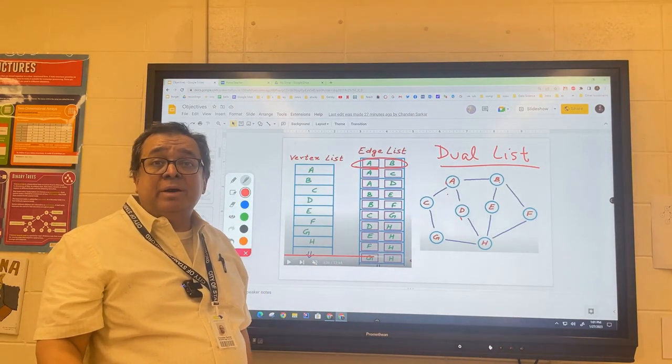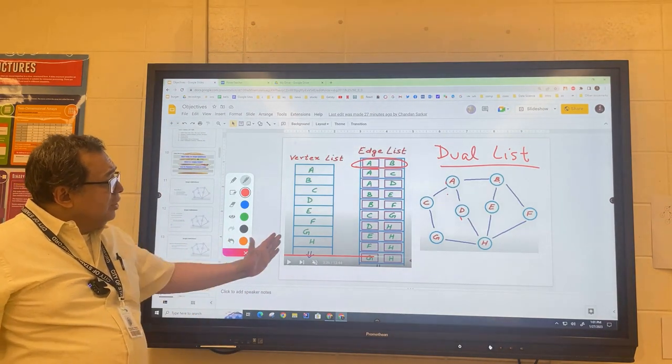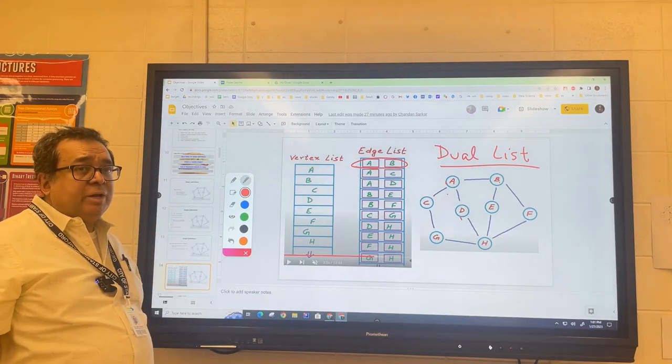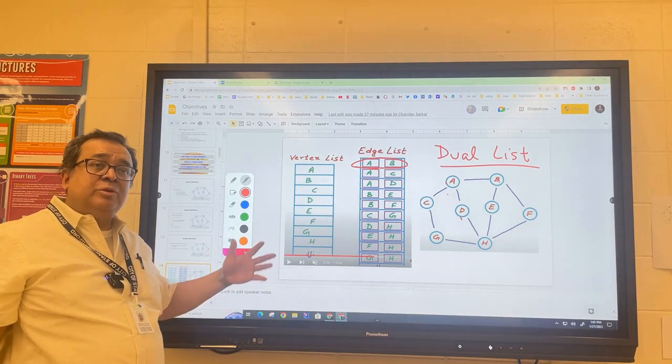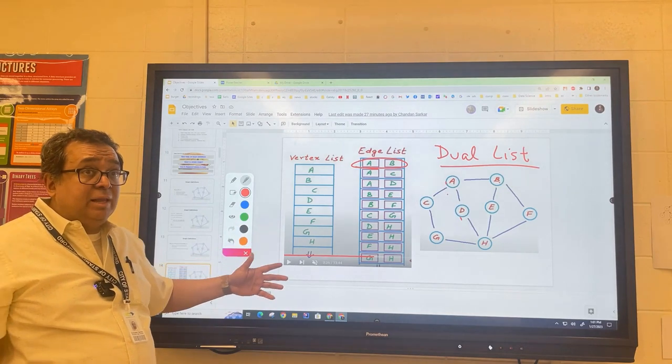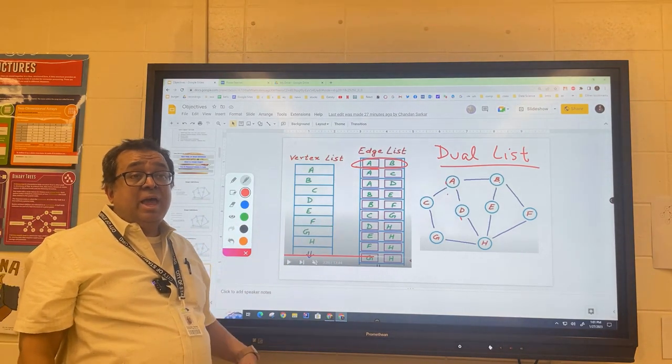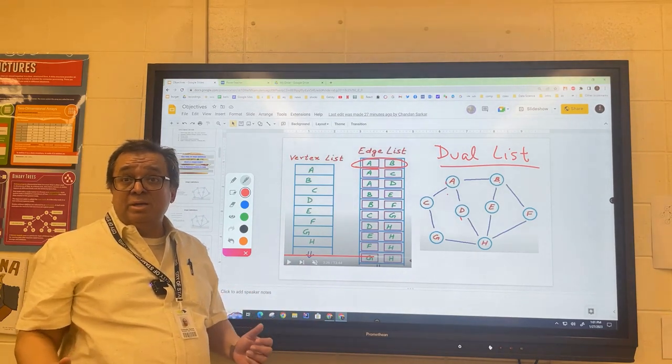So now what are we going to use this list for and what are we going to use this list for? We're going to talk about how efficient it is in memory and how efficient it is in terms of time for those two operations that I discussed earlier. How quickly can we tell how many edges or what edges are connected to a particular vertex, and how quickly can we tell if two vertices are connected to each other with an edge?